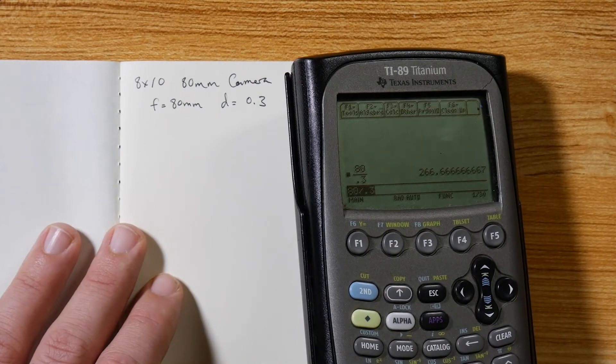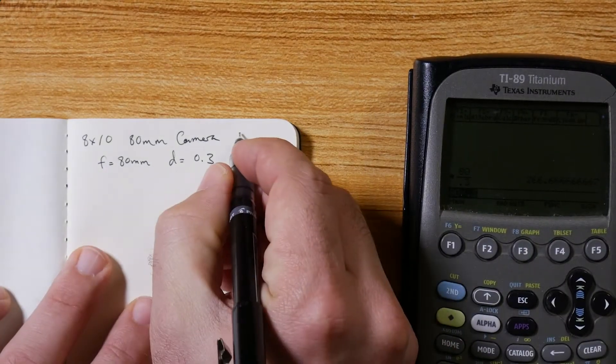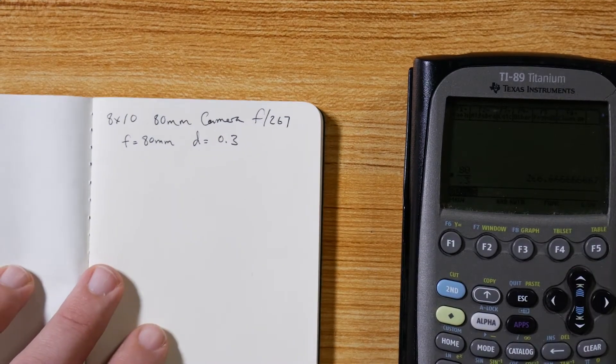266.666, so I'm going to leave that in the calculator for now but I'm going to round it in here and just call this an f/267. In the calculator I'm going to keep this in here so I get exact results.